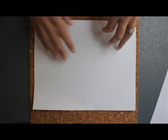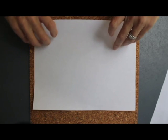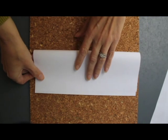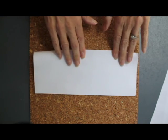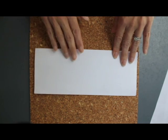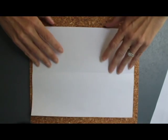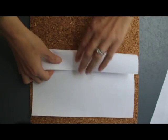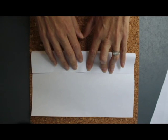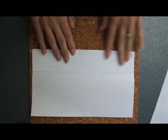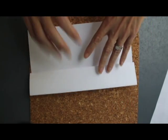So take an eight and a half by eleven piece of paper or an A4, which is very similar, so it should work. Fold it in half lengthwise. Open up and fold the two edges to the middle, and with the other side.